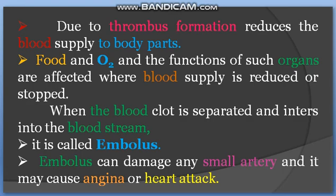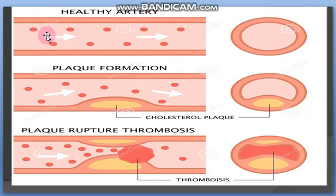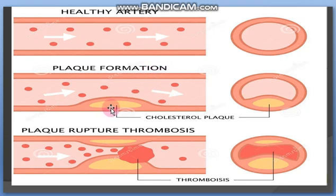Embolus bahut zyada causes banata hai kai diseases ka. Healthy artery bilkul free hoti hai — normal lumen mein blood ka flow hota hai. Agar plaque formation ho to us plaque ke andar cholesterol, fat, calcium, magnesium ki deposition hoti hai — isi ko plaque kehte hain.